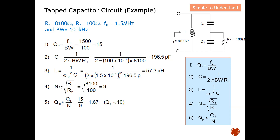Next, calculate n = √(RT / R2) = √(8100 / 100) = 9. With n known, calculate the parallel resonator Q: QP = QT / n² = 15 / 81 ≈ 1.67, which is less than 10. Therefore, I will use the first column to find the capacitor values.